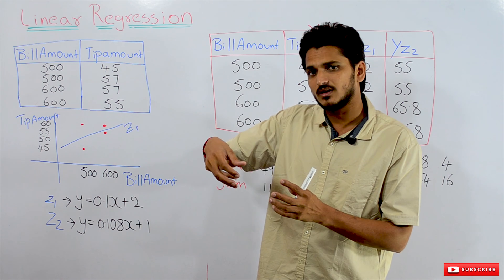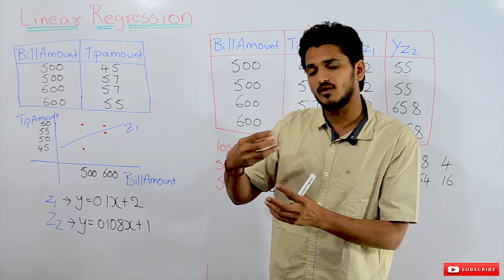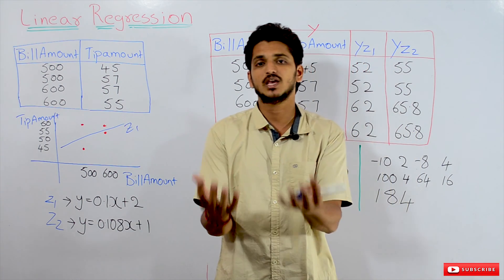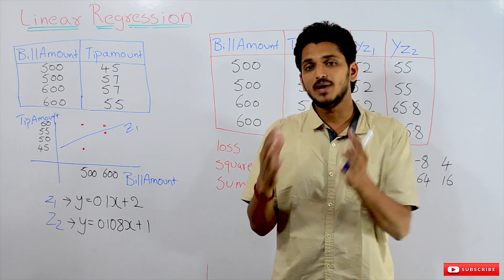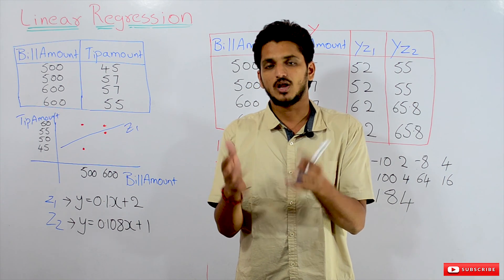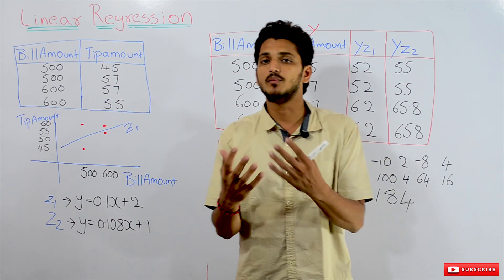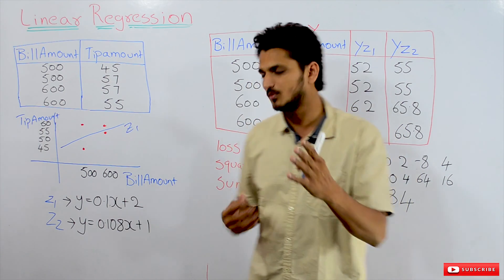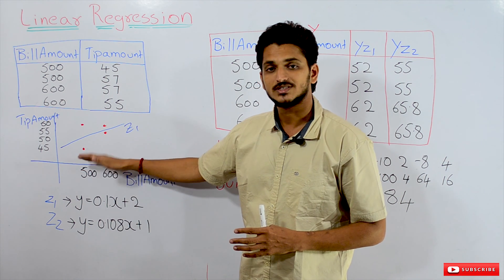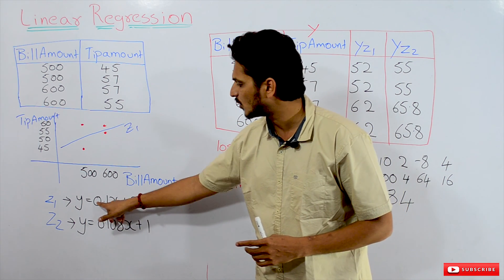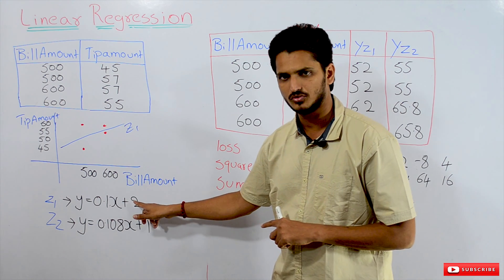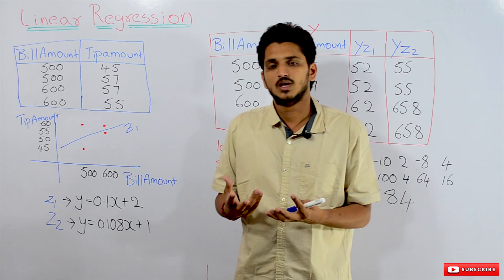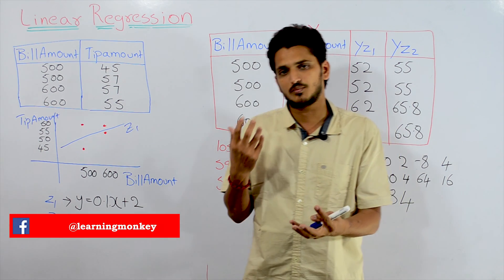With this line equation, we have to predict future data points. Suppose a new customer came into a restaurant and made a bill amount of 500. We have to predict the tip amount. We got the bill amount — that is the x value. Substitute x = 500: 0.1 × 500 = 50, plus 2. Our predicted value is 52. This is how we predict future data points.